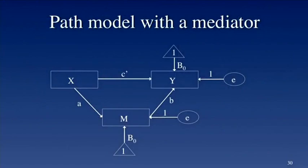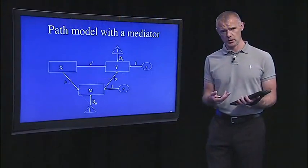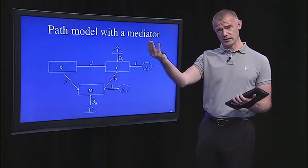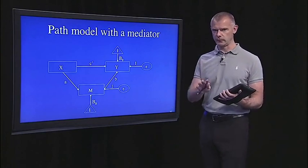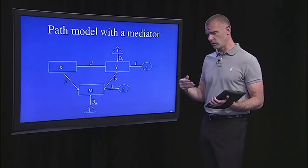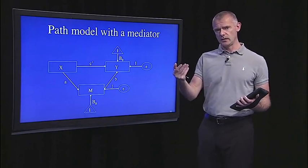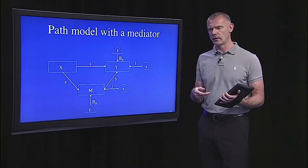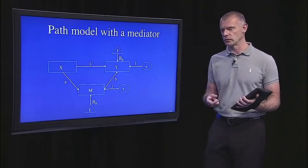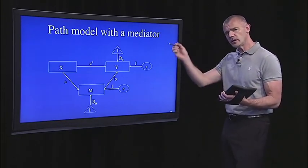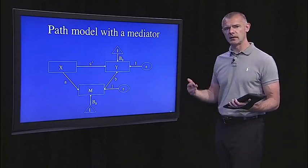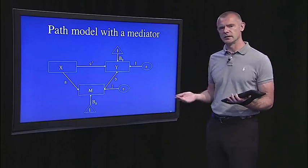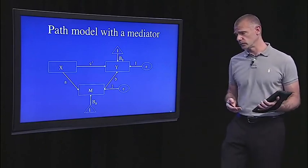The big question is what happens to C? If we look at C to C prime, is there a big difference? Does C go from being strong and significant to zero? If so, that's full mediation. Or, like we saw in the example in the previous segment, if the difference between C and C prime is slight, then it's probably evidence for no mediation or partial mediation. And then we can look at the strength of A and B to tell us about the strength of the indirect effect, which tells us whether we have mediation or not in the first place.